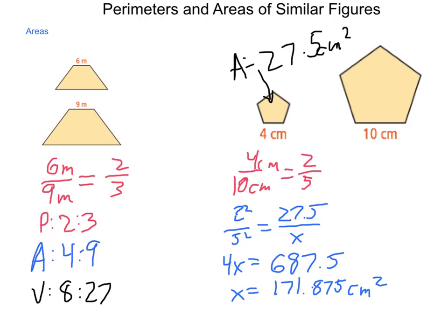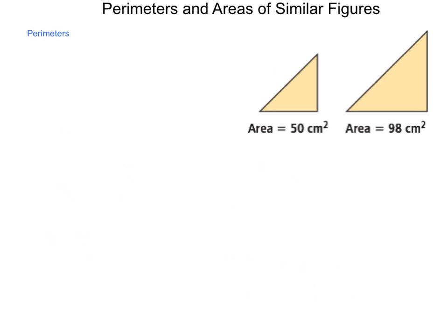But we can also take this and go to find perimeters. We need to find the perimeters of these two shapes. Now, each one of these is just a triangle, and we know their overall areas. So what we need to do is set up our ratios to begin with.